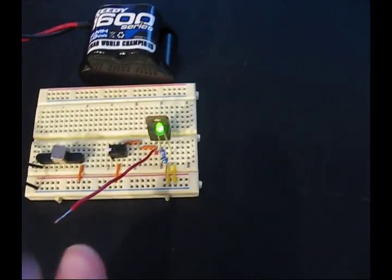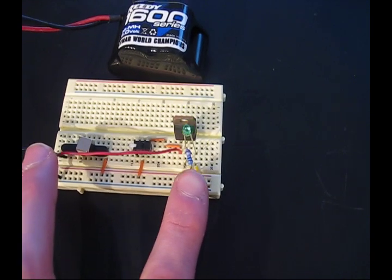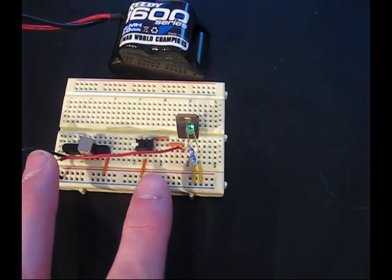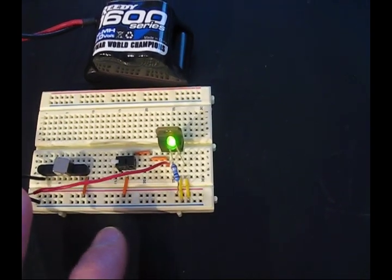But let's say I took one finger, touched this node, and another and I touch the plus 5 volts, the LED goes off. Because the voltage across it is currently high enough to activate the NPN transistor.